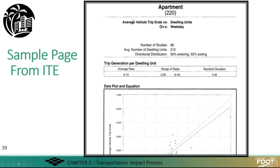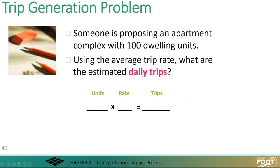Here's another example using ITE land use code 220, apartments. The average rate for apartment land use code 220 is 6.72. If someone is proposing an apartment complex with 100 dwelling units, we multiply 100 dwelling units by the average rate of 6.72 from ITE, and that gives us 672 trips — the impact from that development.